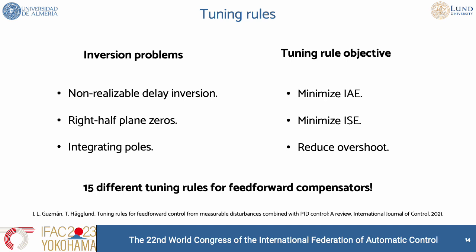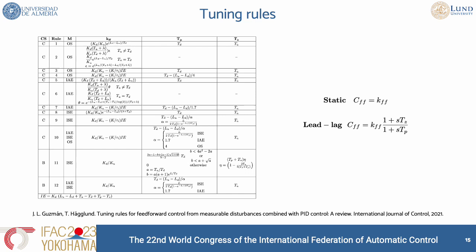In this table you can see a summary of the different tuning rules. The label C means we are using the classical control scheme and B means the Brosilov non-interactive control scheme. The table shows the three different parameters of the lead-lag compensator — in some cases we use a static feedforward compensator, indicated by dashes for the pole and zero. Depending on the objective you have, you will get different values for the parameters according to the metric you want to achieve and the control scheme you want to use.